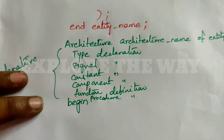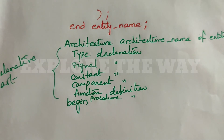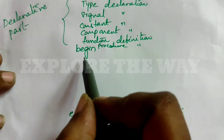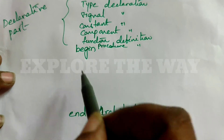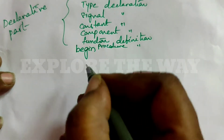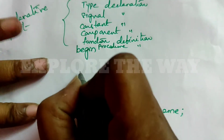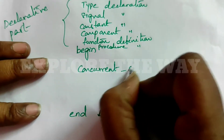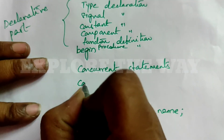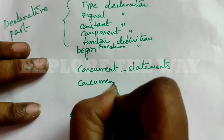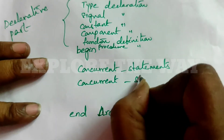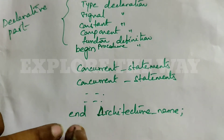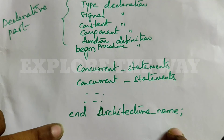The part from 'begin' to 'end' is called the body of the architecture. In this body, you need to write all the concurrent statements — you may write one or more concurrent statements. End the architecture with 'end architecture name'.